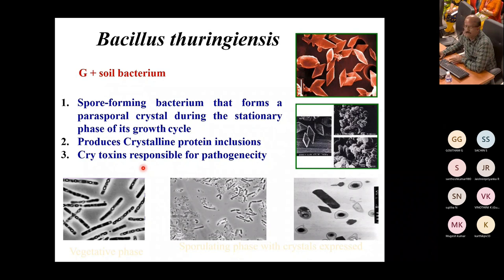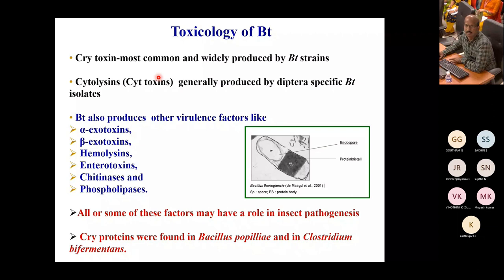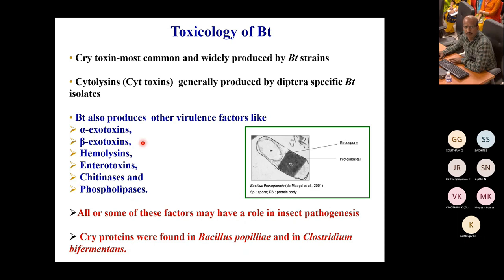The toxicology of Bacillus thuringiensis involves cry toxins — the most common and widely produced by BT strains. Cytolysins are generally produced by diptera-specific BT isolates. Other virulence factors include alpha-exotoxin, beta-exotoxin, hemolysins, enterotoxin, chitinase, and phospholipases.